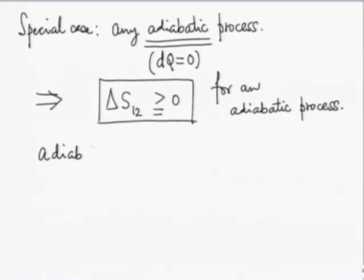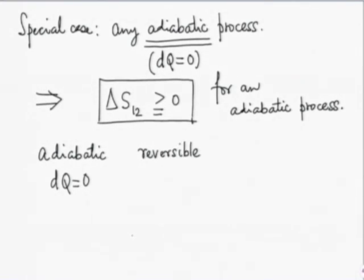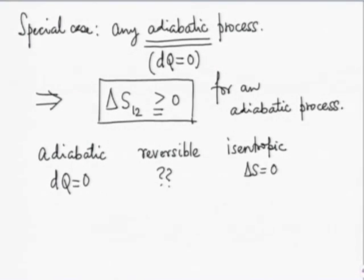There are three words which appear to be confusingly related to each other. One is adiabatic — we came across it quite early. Adiabatic means dQ = 0. Then we have the word reversible — things can be reversed, the Carnot theorem becomes an equality, the Clausius inequality becomes an equality. The third word is isentropic. Isentropic means ΔS = 0, or entropy not changing, dS = 0 — just the way isothermal means temperature not changing.